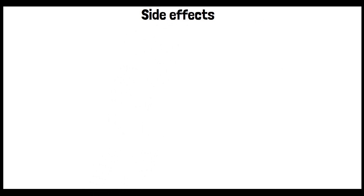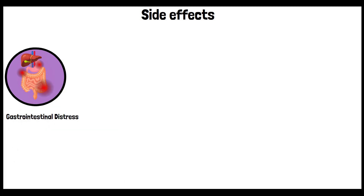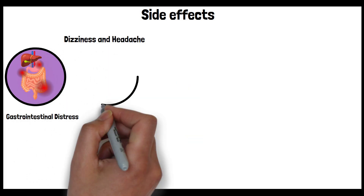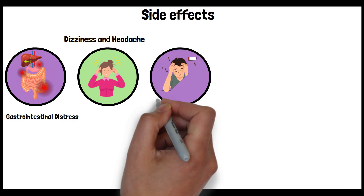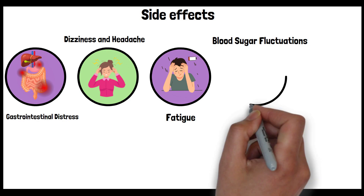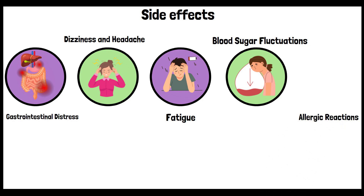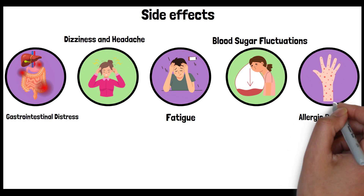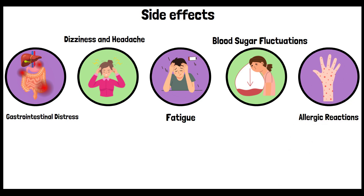Inositol is generally well tolerated, but like all supplements, it can cause side effects in some individuals, especially at higher doses. Potential side effects include: gastrointestinal distress such as nausea, gas, bloating, and diarrhea; dizziness and headache; fatigue or tiredness; blood sugar fluctuations — since it can affect blood sugar levels, it may cause hypoglycemia in some cases, especially in individuals with diabetes on blood-sugar-lowering medication; and allergic reactions, which can range from mild skin rashes to more severe forms. Lower doses are generally well tolerated.